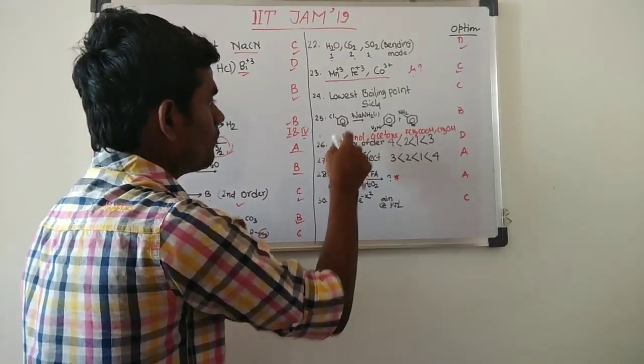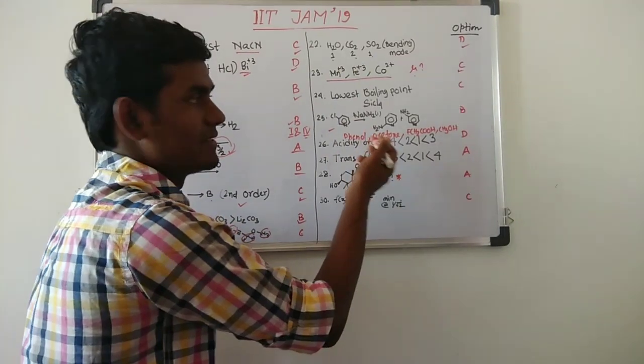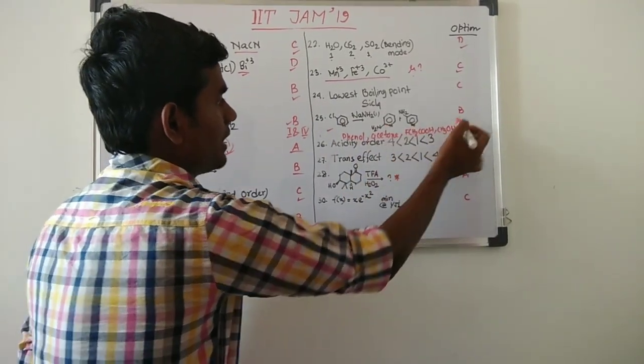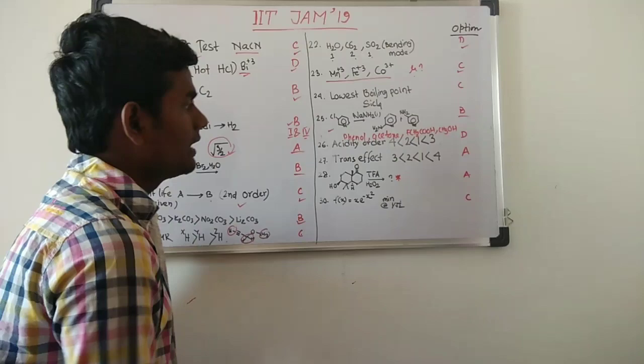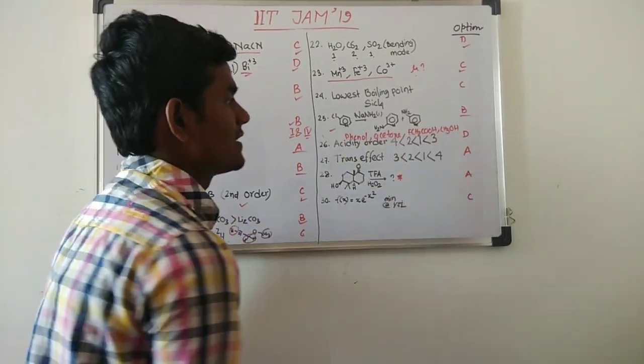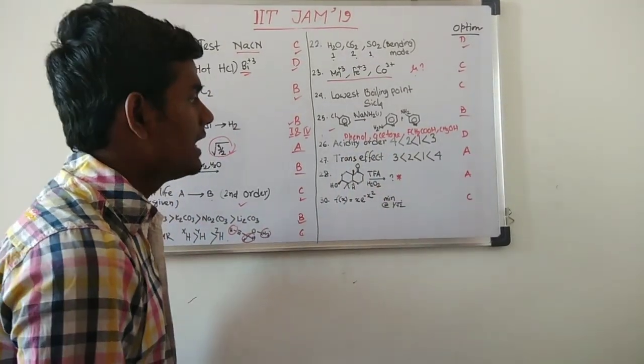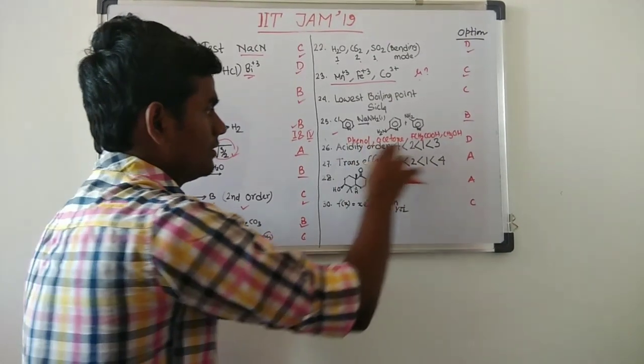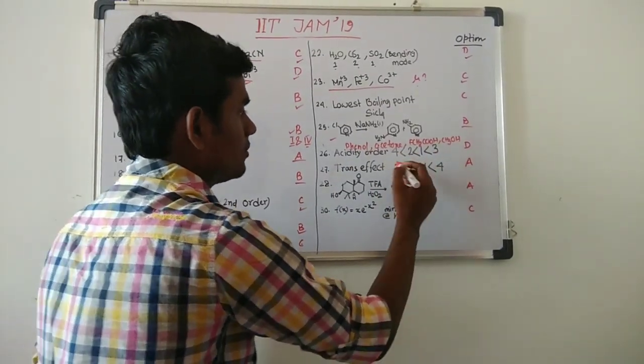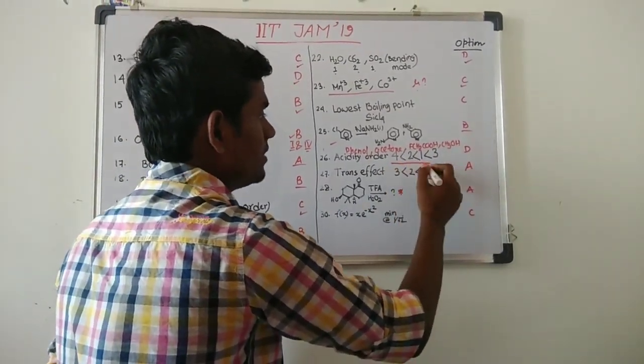Then they have asked one good question about benzyne. This will give these two products and the option will be B. And then they have asked phenol, acetone, fluoroacetic acid, and methanol: what will be the acidity order? This is the order they have given and the option that is correct is in this way and it is D.